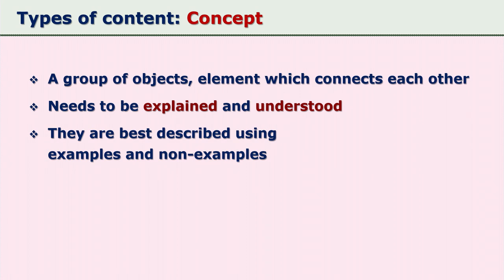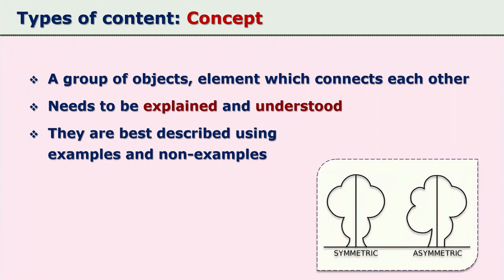The second content type is concepts. Concepts are groups of objects, elements, or information connected with each other. The different parts that make up a concept cannot make sense independently, unlike facts which hold meaning on their own. For a learner to understand a concept, the entire concept must be explained as a whole.